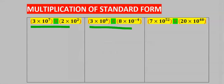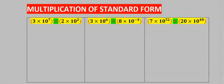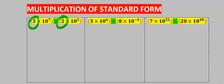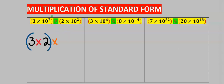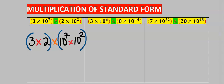Let's consider each of these questions. Here we're going to multiply two standard forms. The numbers will multiply first, and the tens will equally multiply. Three times two gives us six.